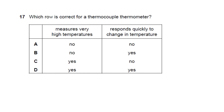Question 17: which row is correct for a thermocouple thermometer? A thermocouple uses the Seebeck effect — two metal junctions convert temperature to voltage. It can measure very high temperatures and responds quickly to temperature changes, making it a sensitive device. Answer: D.